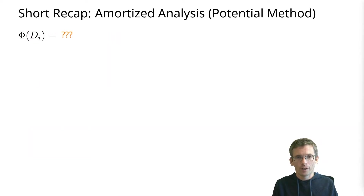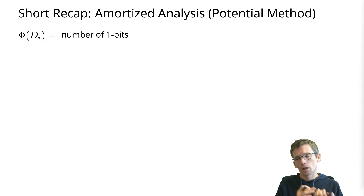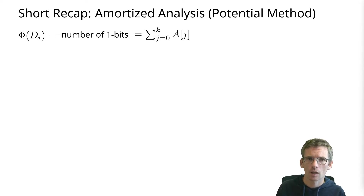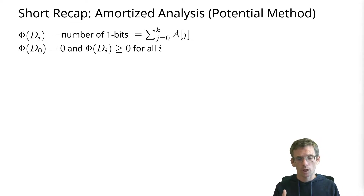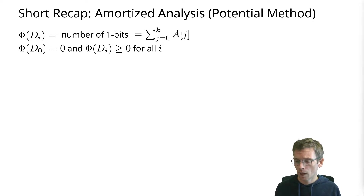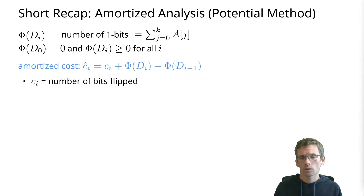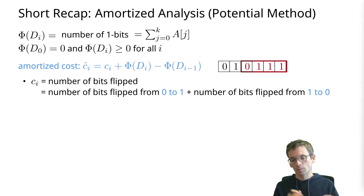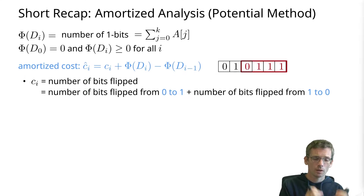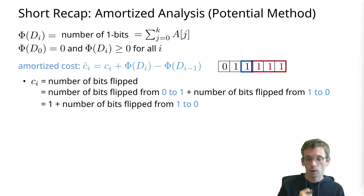Potential method. We need to define a potential. For the binary counter, the potential we use is the number of one-bits. In our notation this is a sum over the a_j values, since those are either zero or one — summing them gives exactly the count of ones. We check that the potential at the beginning is zero and that it always stays larger than or equal to the initial potential, which is satisfied since the number of one-bits is non-negative. The actual cost corresponds to the number of bits flipped — specifically, one plus the number of bits that go from one to zero, since there is only one bit that goes from zero to one.